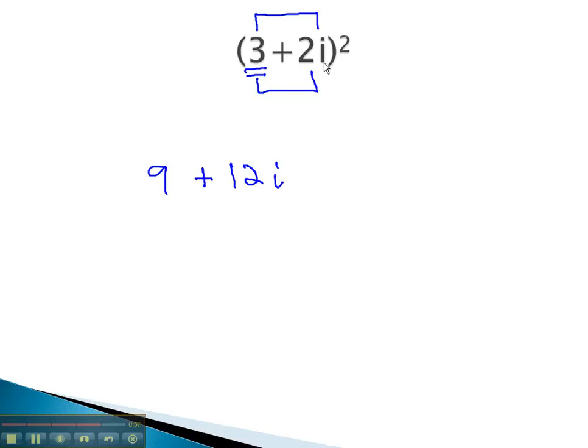Finally, we square the last term. 2 squared is 4. i squared will be a negative 1. The i squared changes the positive 4 into a negative 4.